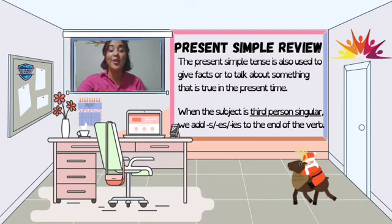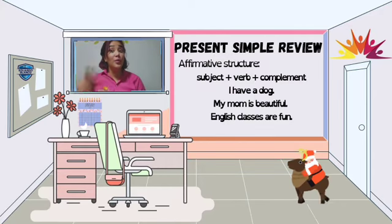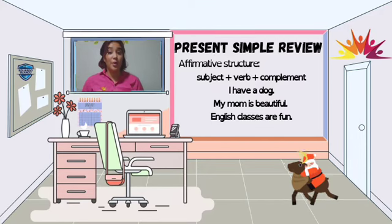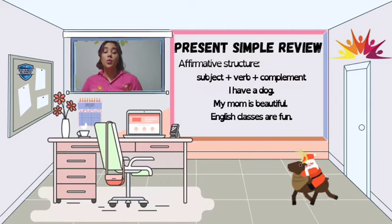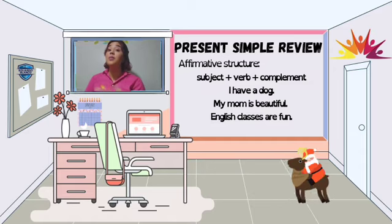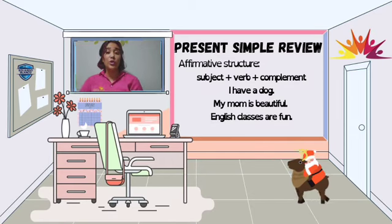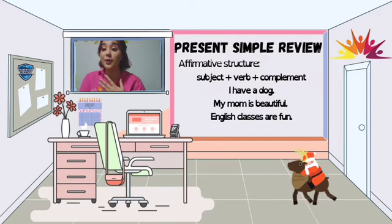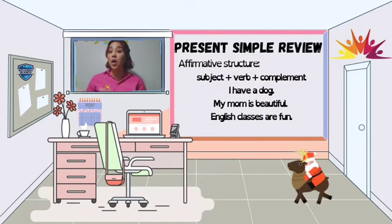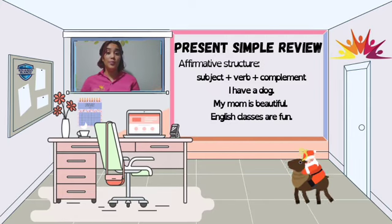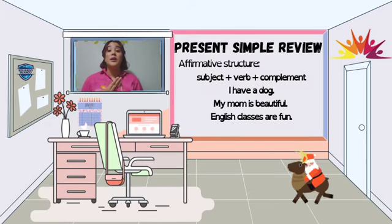Let's go now with the affirmative structure. Like we learned before, every sentence needs to have a subject and a verb. It doesn't necessarily need to have a complement — that is something we add if we want to. The order is: subject, verb, then complement. Nuestra estructura siempre debe llevar un sujeto y un verbo; si queremos agregar información extra, agregamos un complemento, pero esto no es necesario. Por ejemplo: I have a dog. My mom is beautiful. English classes are fun.